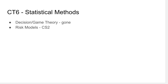Risk models have moved to CS2 — which is literally called risk models, so that makes sense. But then ruin theory, which builds directly on risk models and is very much a capital modeling approach, has been moved to CM2, which I really don't understand. CM2 is basically the new CT8, a financial exam, and it feels like they're sprinkling insurance into it to make it actuarial. Ruin theory should probably have stayed in CS2.